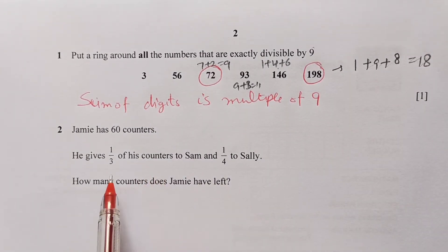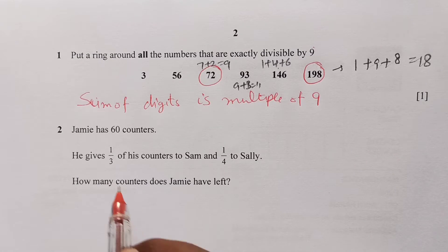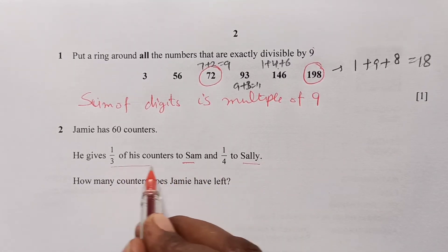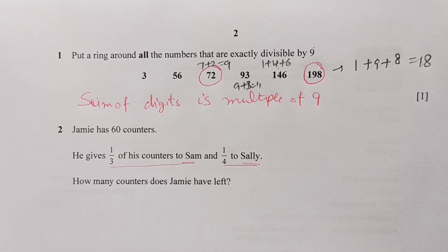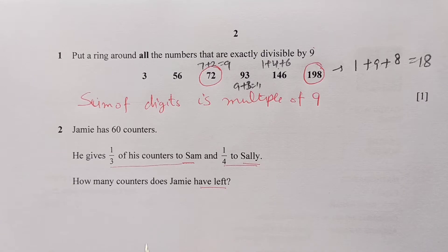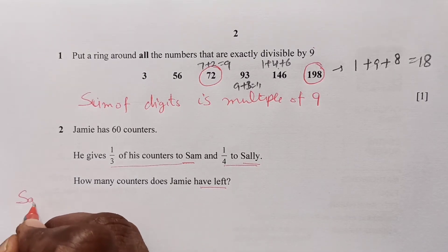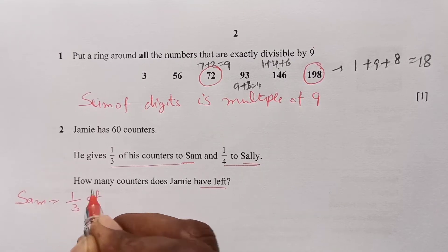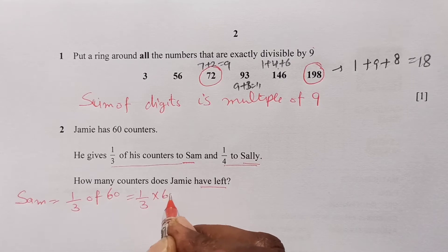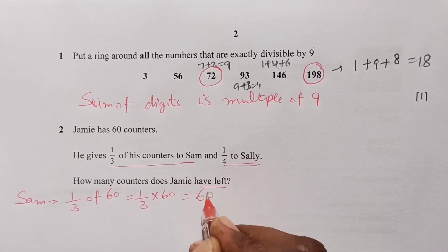Question two: Jamie has sixty counters. He gives one-third to Sam and one-quarter to Sally. We need to find how many counters Jamie has left. First, let's find how many Sam received: one-third of sixty is sixty divided by three, which is twenty.